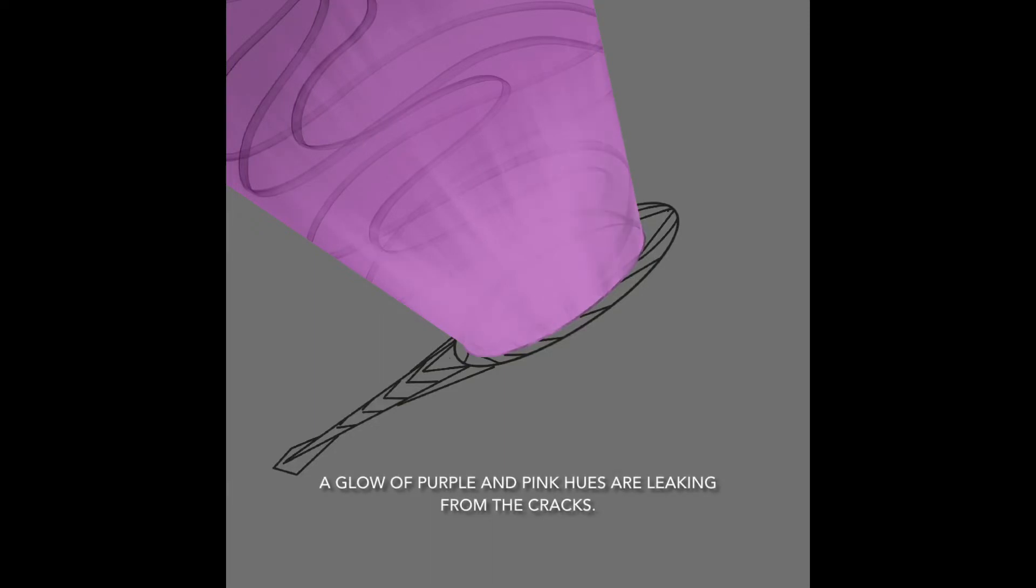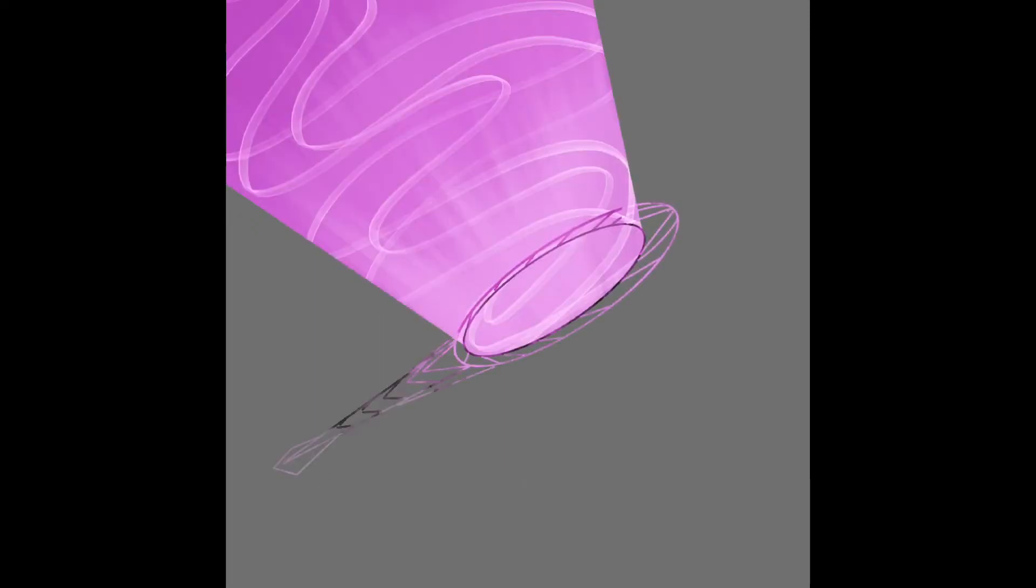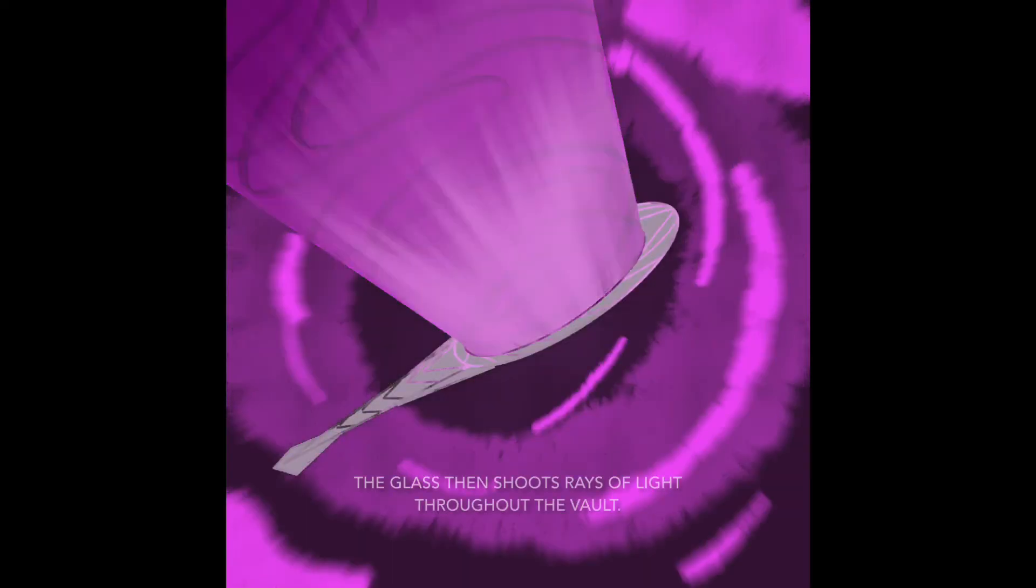A glow of purple and pink hues are leaking from the cracks. You feel its power pulsate at your fingertips as you touch it. The glass then shoots rays of light throughout the vault.